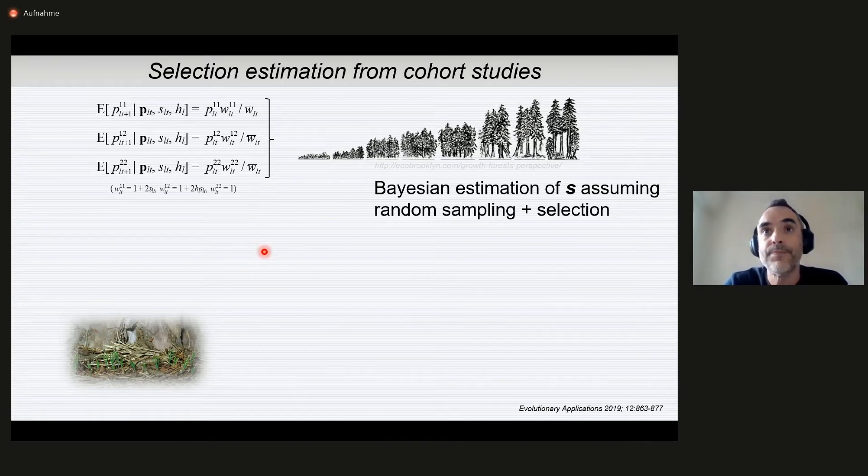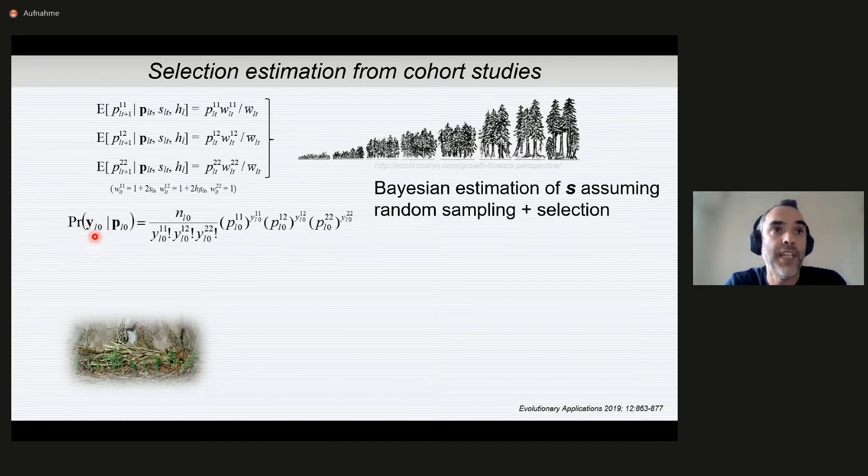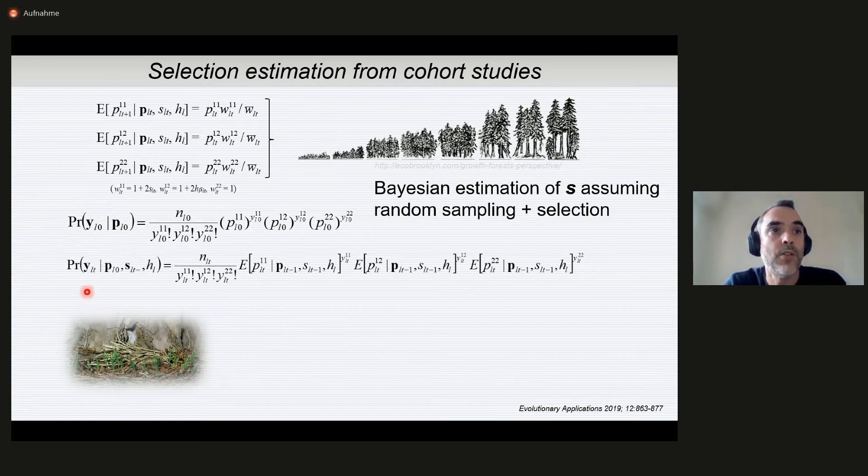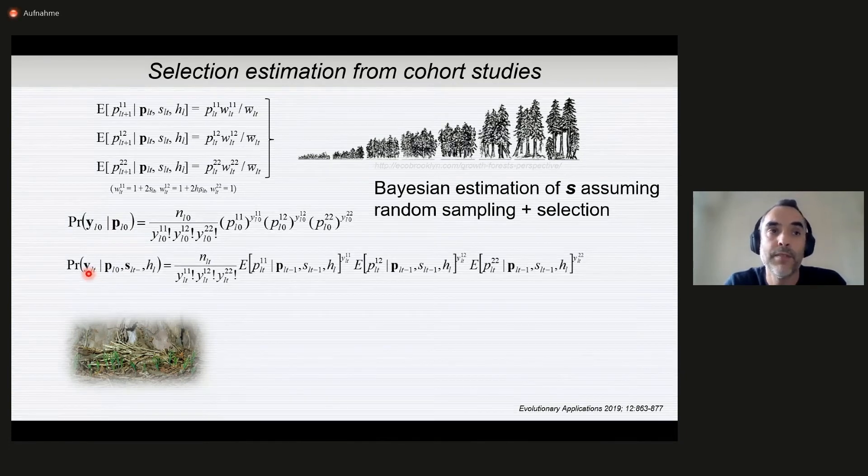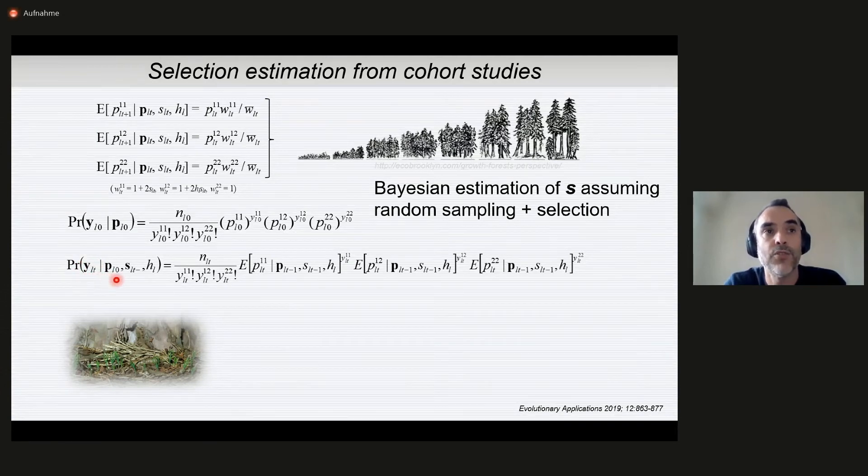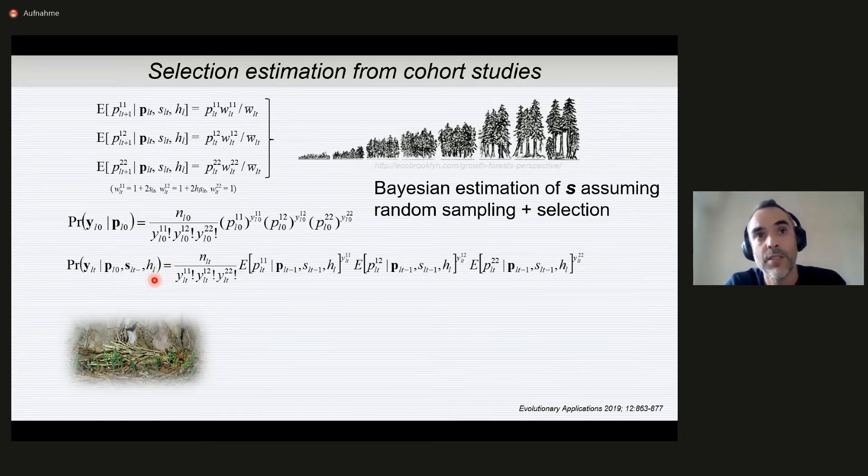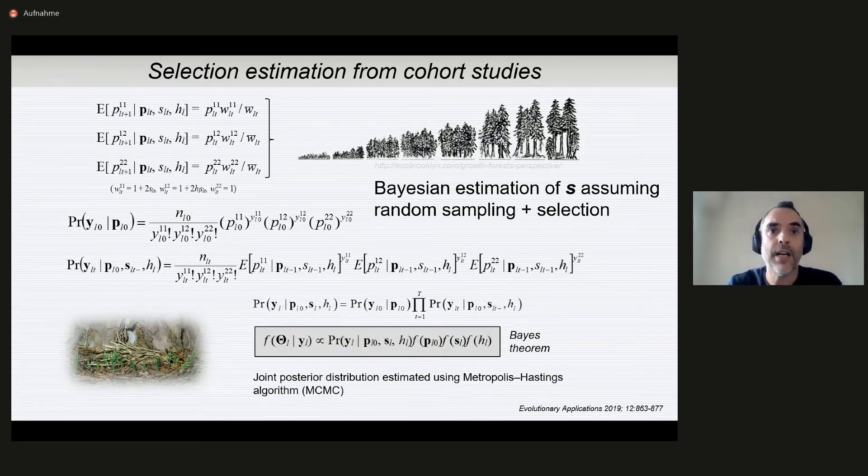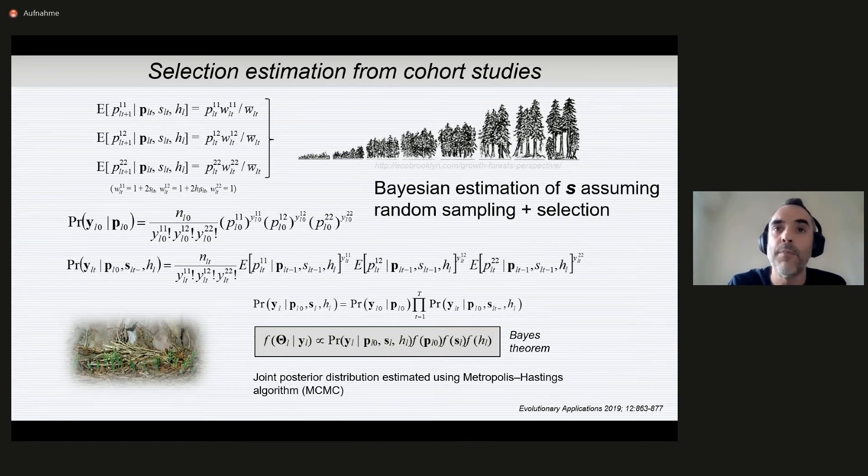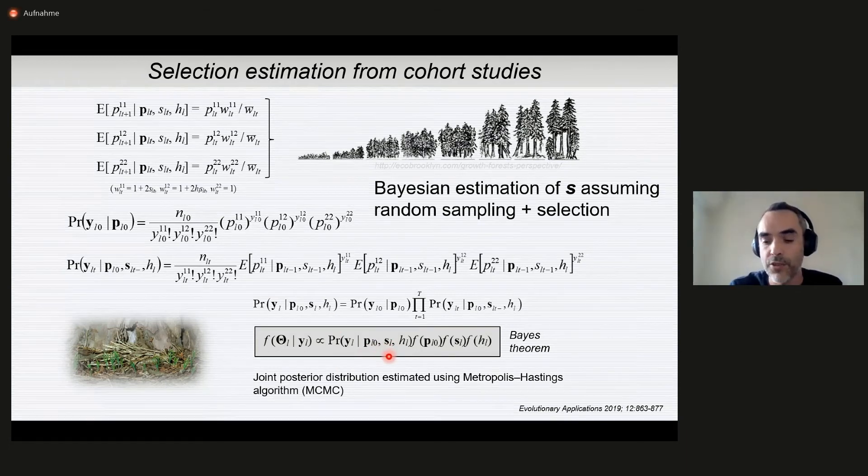So we use a Bayesian estimation approach, assuming that we have both random sampling plus selection, and we can write the probability of the initial count of genotypes that we observe at time zero as a function of the unknown genotypic probabilities. Then we can also write down the probability of observing genotypic counts at time t as a function of the initial unknown genotypic frequencies and of the unknown selection coefficients in previous time steps, and also if we want to include in the model the dominance coefficient. Then using MCMC approach, we can approximate the posterior joint distribution of the genotypic frequencies and the selection coefficients at each time step.